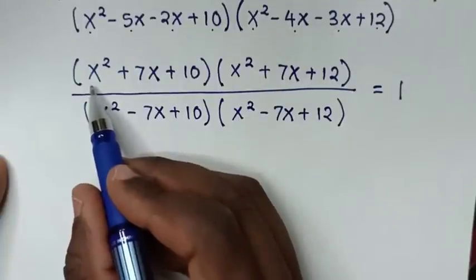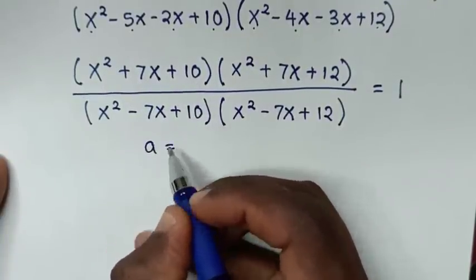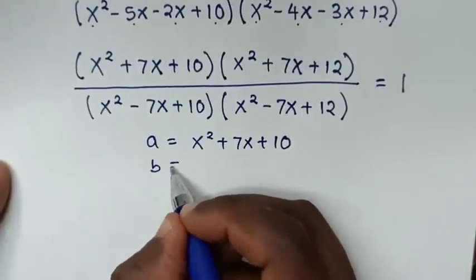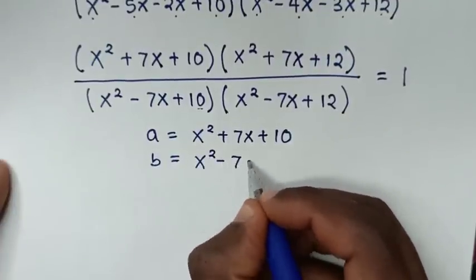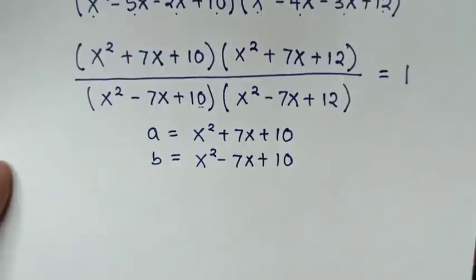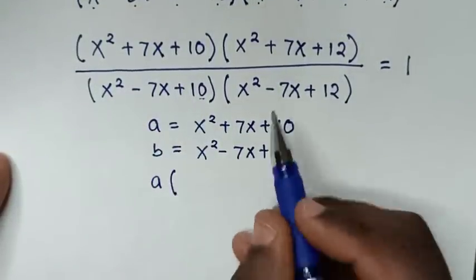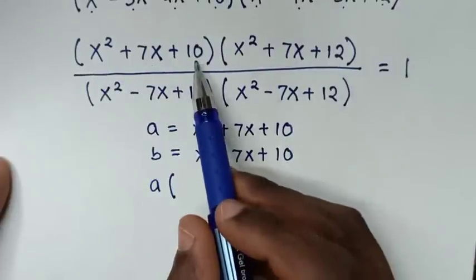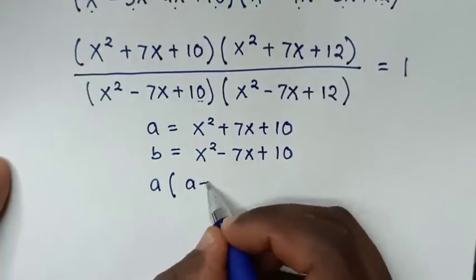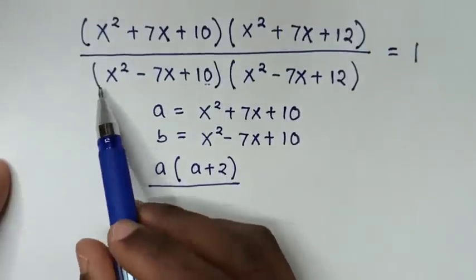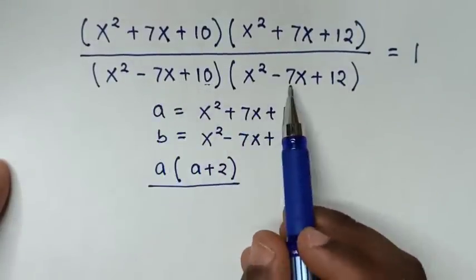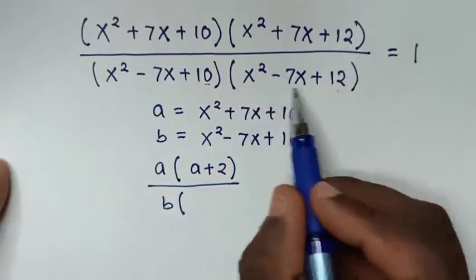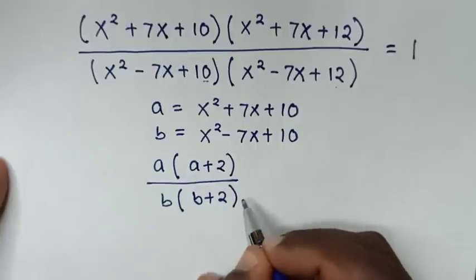In the next step, we let a = x² + 7x + 10 and b = x² - 7x + 10. Then notice that x² + 7x + 12 is 2 more than a, so it equals a + 2. And x² - 7x + 12 is 2 more than b, so it equals b + 2. Our equation becomes a(a+2) over b(b+2) equals 1.